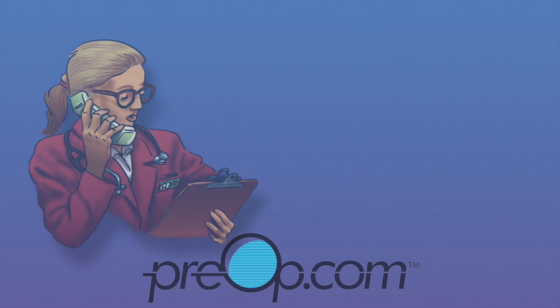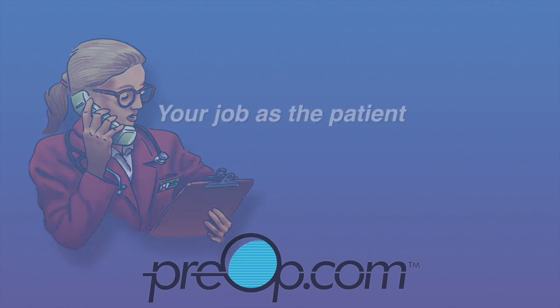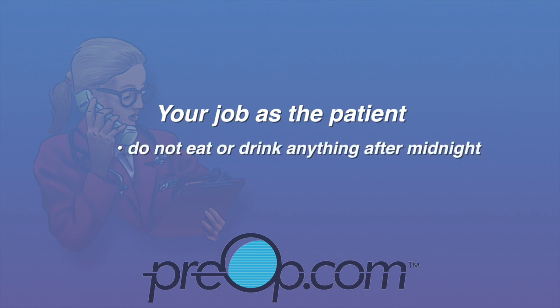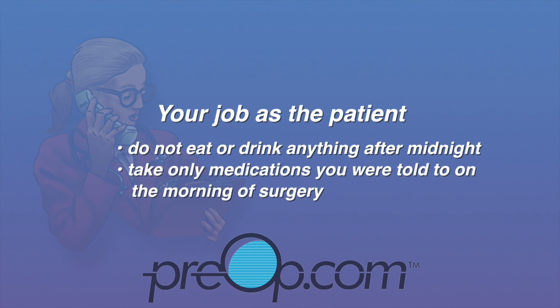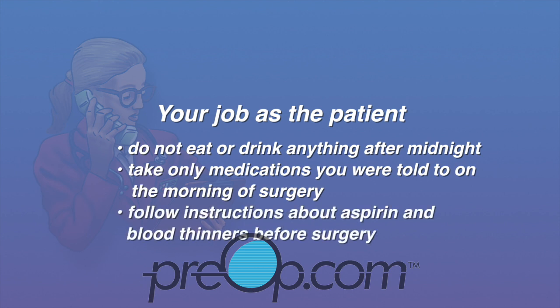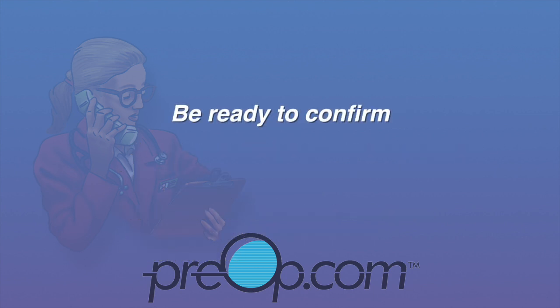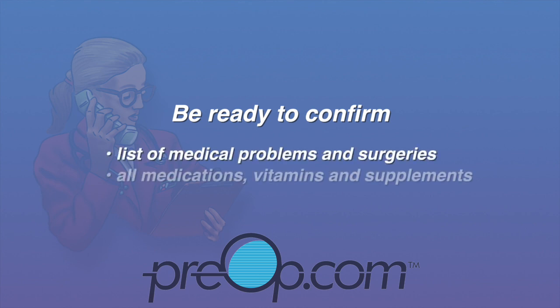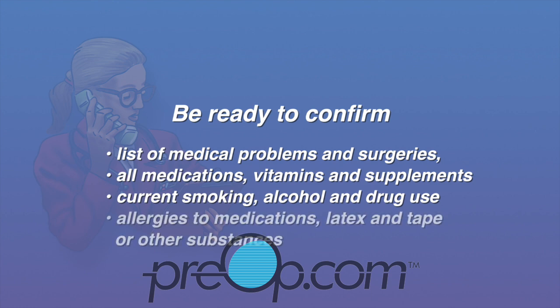To avoid cancellation or complications from anesthesia or your procedure, do not eat, drink, or chew gum after midnight the night before the procedure, unless you are given different instructions. Take medications you were told to on the morning of the procedure with a sip of water. Follow instructions about aspirin and blood thinners before surgery — you may be asked to stop taking them or to continue taking them depending on your situation. Arrive on time, and be ready to verify your list of medical problems and surgeries, all medications including vitamins and supplements, your current smoking, alcohol and drug use, and all allergies, especially to medications, latex, and tape.